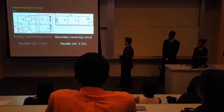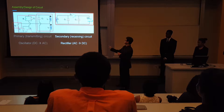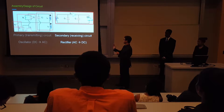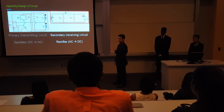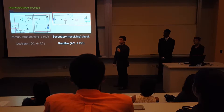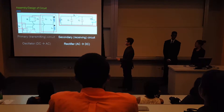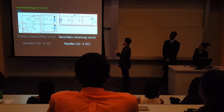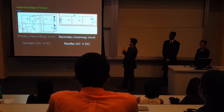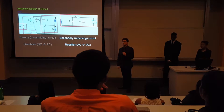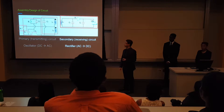On the other side, we have our secondary receiving circuit. The voltage is transferred onto the secondary circuit in the form of AC current. Since our LED runs on DC current, we have a rectifier that converts the current back to DC. Notably, a half-bridge diode serves as our rectifier, meaning it only passes positive voltages — which accounts for some power loss.